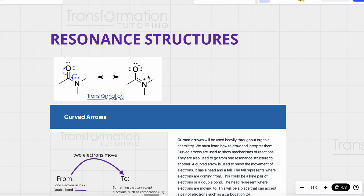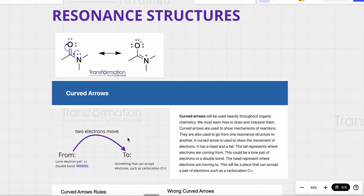Now that we know resonance structures are different electronic representations of the same molecules, in order to draw this correctly we need to understand curved arrows, because we will be using curved arrows to draw our resonance forms throughout all of organic chemistry. This is a really important concept to understand and to practice.